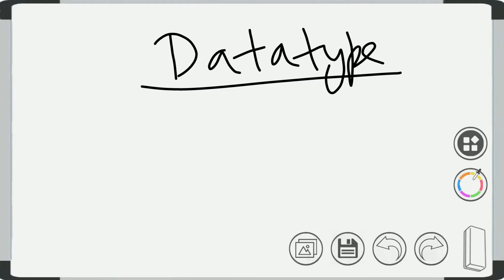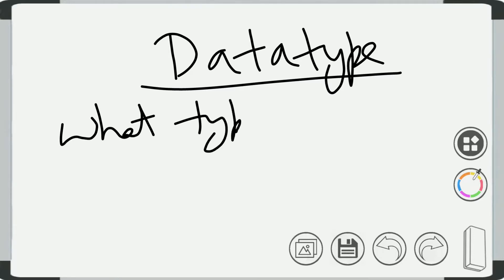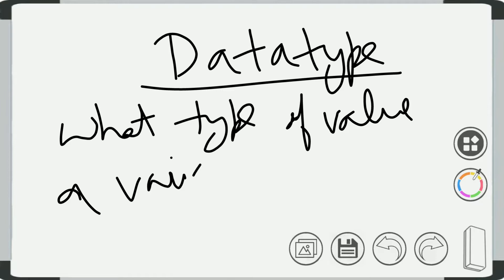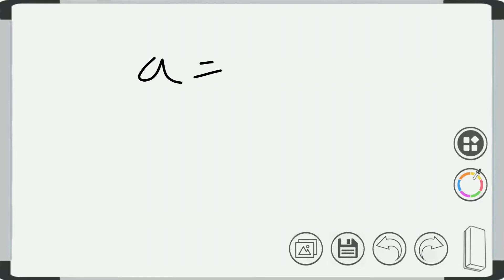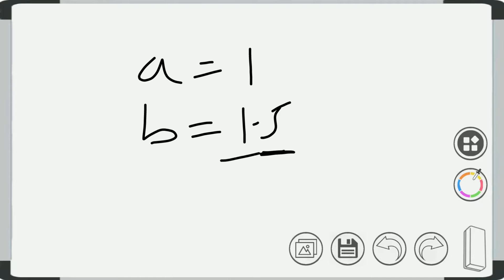The data type specifies what type of data or value a variable can hold. For example, suppose this is a variable 'a' and it is having the value 1. There is another variable 'b' and this is having the value 1.5. So this is floating point and this is integer type. The data type tells what type of value the variable can hold.